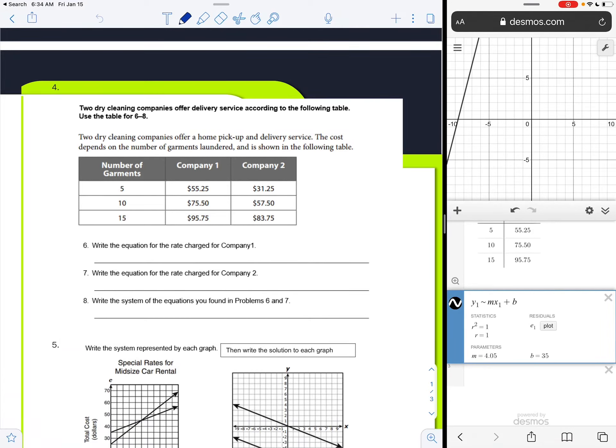Alright, we're going to continue the notes from yesterday. Those of you that were in class know that I asked you guys to complete number four for homework to come up with an equation. We have two dry cleaning companies that offer delivery service, and we're going to look at those two companies.